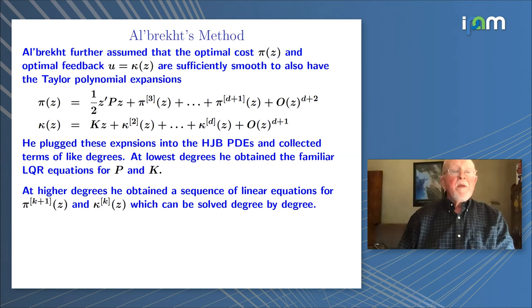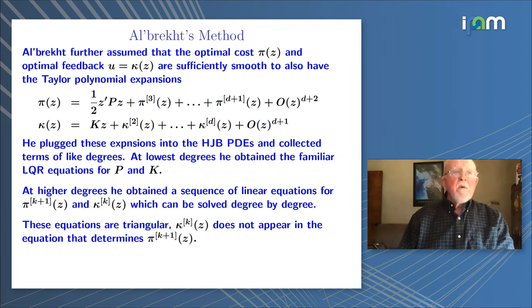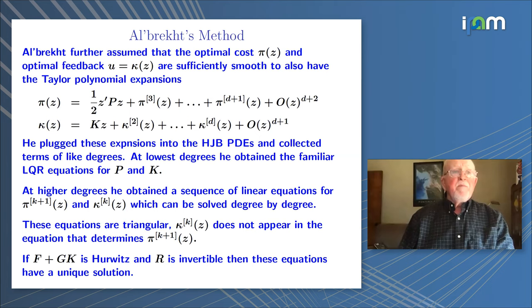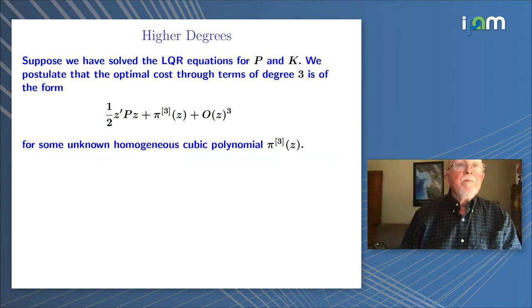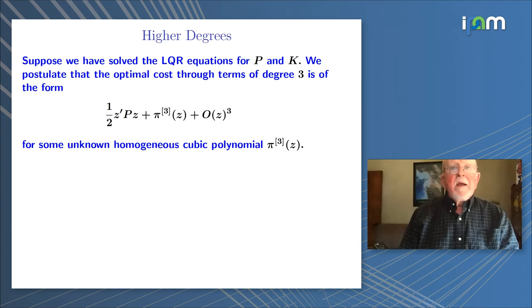At higher degrees, Albrecht obtained a sequence of linear equations for the K plus first part of the optimal cost and the Kth part of the optimal feedback. These equations are triangular — the K plus one part of the optimal cost is in its own equation without the optimal feedback of degree K. It turns out that if the matrix F plus GK — that's the closed-loop linear part of the dynamics — is Hurwitz, then the equations that Albrecht obtained have a unique solution. Let me show you how that works, because we want to do it again in infinite dimensions.